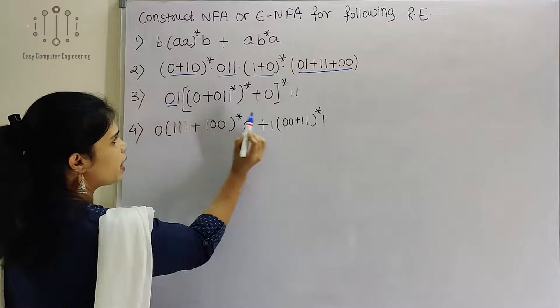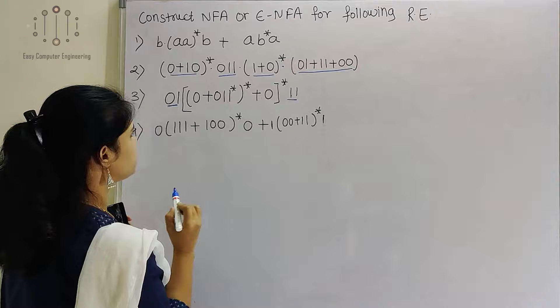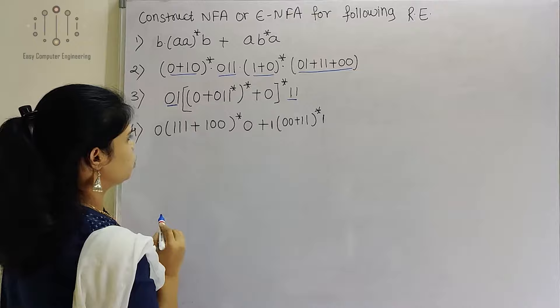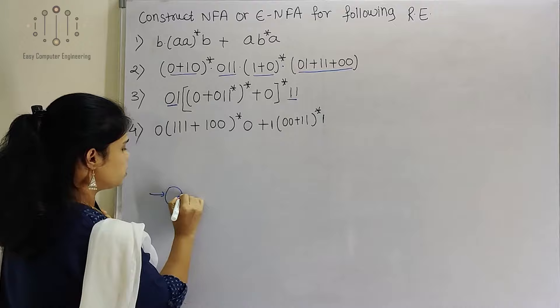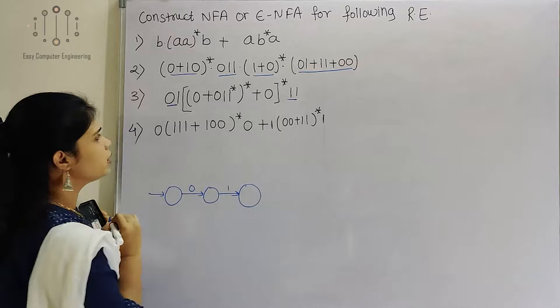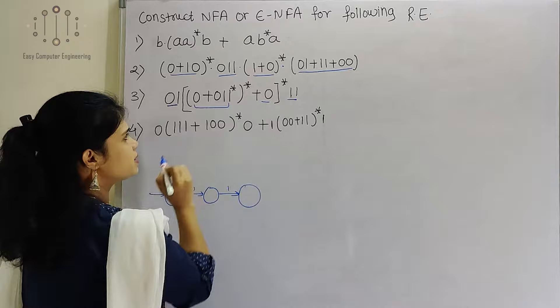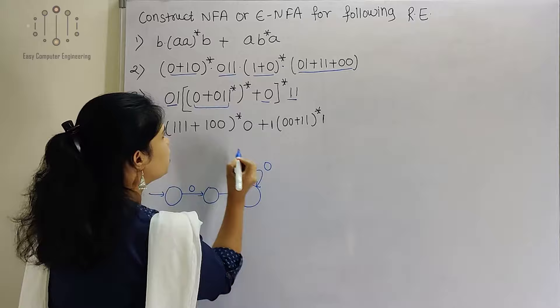Now forward to the third example. This expression starts with 01 and ends with 11. All strings end with 11. In between there is a bracket with a star of the whole inner expression, which itself contains another regular expression plus 0. Let us start by showing 0, then 1. Then there is an OR operator between two sub-expressions. This 0 is one regular expression.